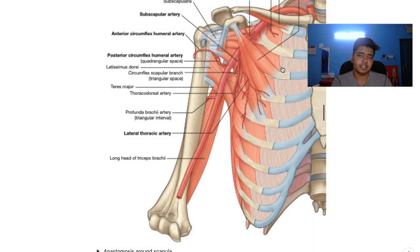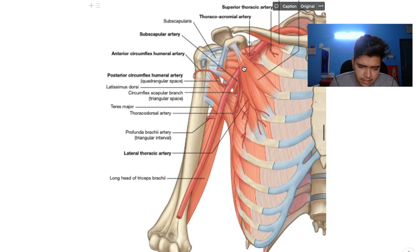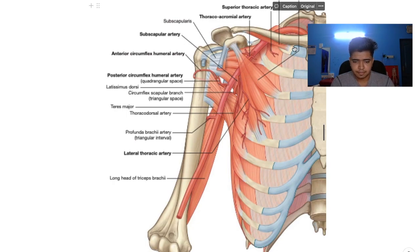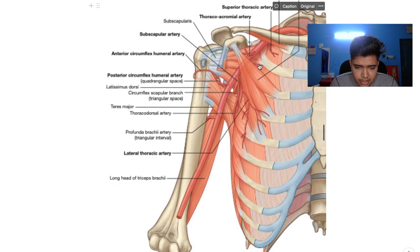Now let's look into the cadaveric image of the axillary artery. As you can see here, this is the axillary artery running, and this is the second part which is below the pectoralis minor. From the first part you can see the superior thoracic artery running and supplying the thoracic cage. From the second part we can see the thoracoacromial trunk, which gives off the acromial branch, pectoral branch, clavicular branch, and the deltoid.